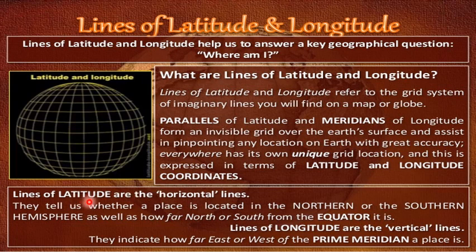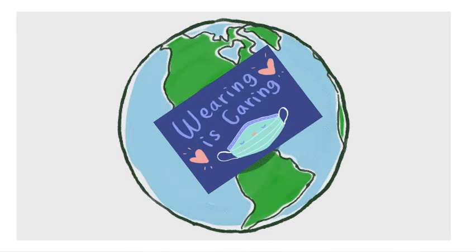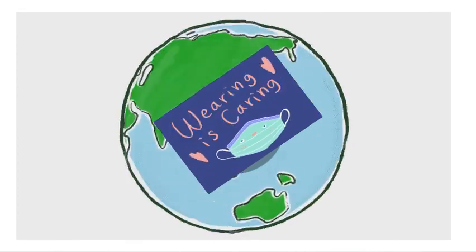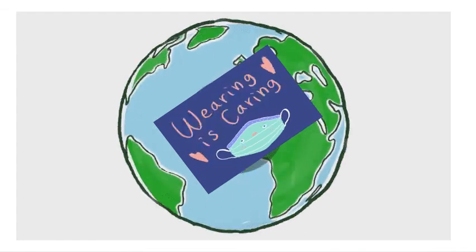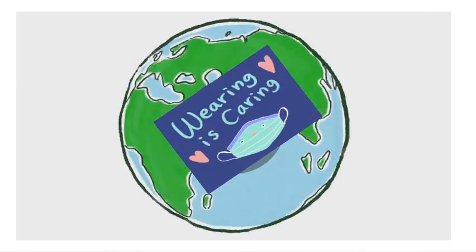Lines of latitude are the horizontal lines — they tell us whether a place is in the northern or southern hemisphere and how far north or south of the equator it is. Lines of longitude are the vertical lines and indicate how far east or west of the prime meridian a place is. This completes chapter number eight on longitude and latitude.